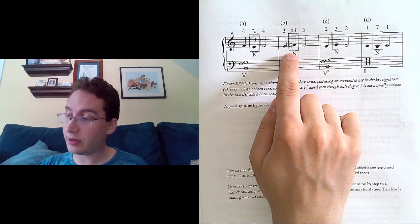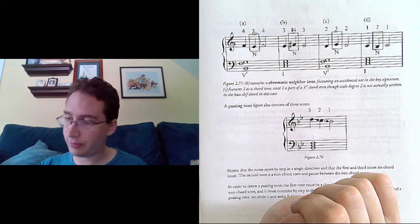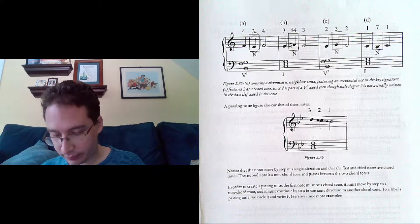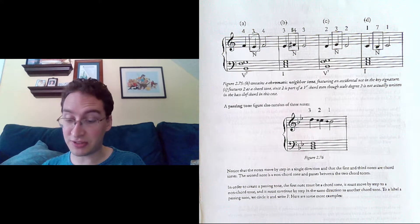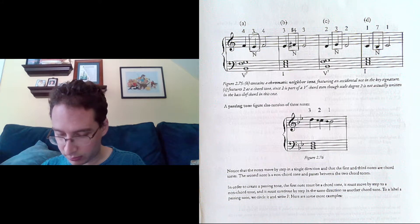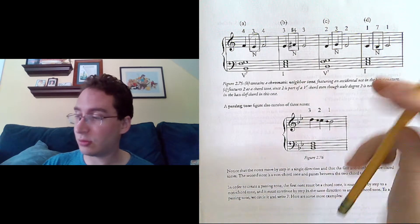This next example, letter B, we have a chromatic neighbor tone. So, you have something that's not in the key. That can give you a special sort of sound.